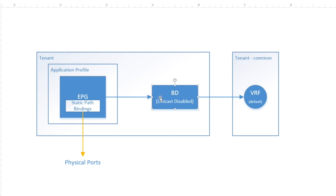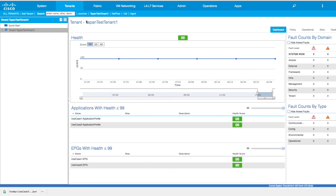Every BD needs to reference a VRF. Since we don't really care which VRF it's in, we are going to use the default VRF which sits in the common tenant. At the EPG level we are going to have static path bindings, where we add all the physical ports that need to have that VLAN extended amongst one another. Now let's log on to the controller and take a look at what it looks like.